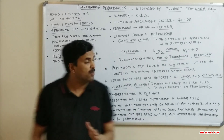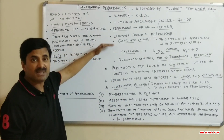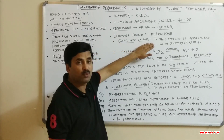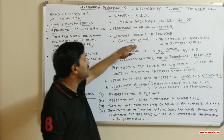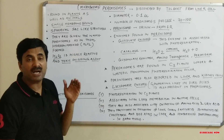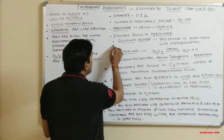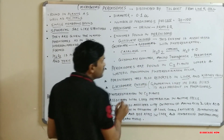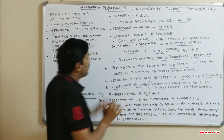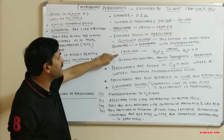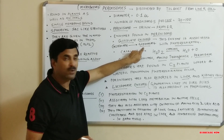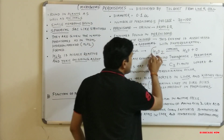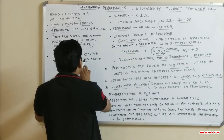In the peroxisomes, certain enzymes are found. The very first important enzyme is glycolate oxidase. Whenever we study photorespiration, this enzyme participates in it. This enzyme is involved in the conversion of glycolate into glyoxylate, so it is associated with photorespiration. During this conversion of glycolate into glyoxylate by glycolate oxidase, H2O2 is formed.